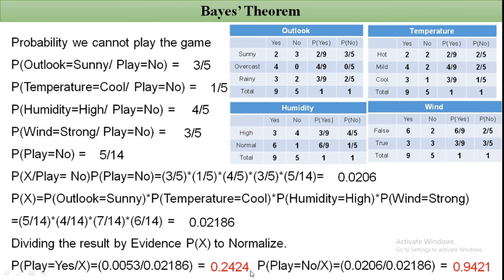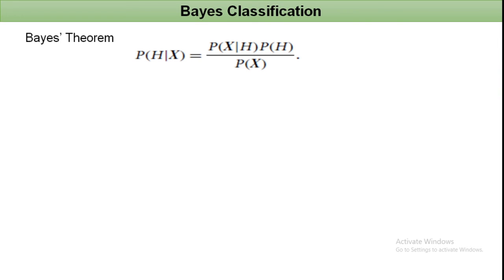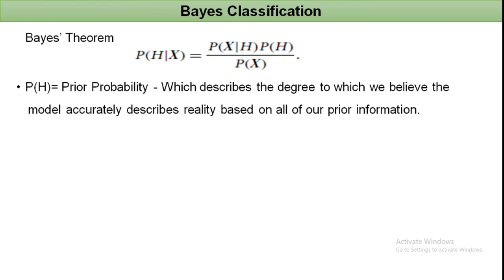In Naive Bayes classification, Bayes' theorem states: P(H | X) is the probability of hypothesis H given condition X. Here, X is the input condition (e.g., outlook is sunny, temperature is high), and H is the output class (e.g., play or not play). We find P(X | H) and P(H), take their product, then divide by P(X) to get the answer.